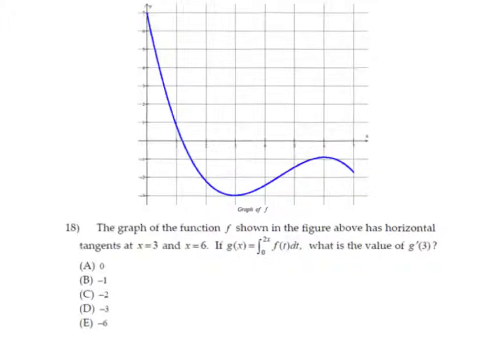You have a graph here of f, and you're told that g is equal to the integral from 0 to 2x of f(t)dt, and then it asks for the value of g prime. Well, g prime, remember the derivative of an integral is simply the function, so this seems really easy.